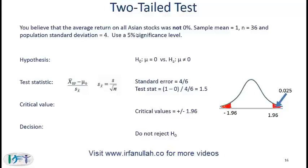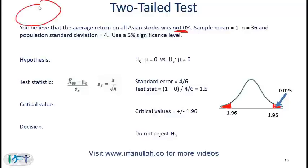You believe that the average return on all Asian stocks was not 0%. Your population is the return on all Asian stocks. In hypothesis testing, you draw a sample and then test whether your belief or hypothesis is correct. From the population you draw a sample; the sample mean is 1, the sample size is 36, and the population standard deviation is 4.